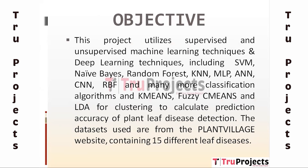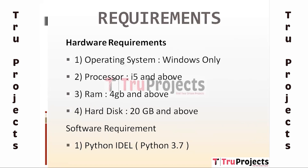The objective of the project is to use supervised and unsupervised machine learning and deep learning techniques, including Support Vector Machines, Naive Bayes, Random Forest, K-Nearest Neighbors, Multi-Layer Perceptron, Artificial Neural Networks, Convolutional Neural Networks, Fuzzy C-Means, and more, to predict plant leaf disease detection and compare accuracy using 15 datasets from the Plant Village website.